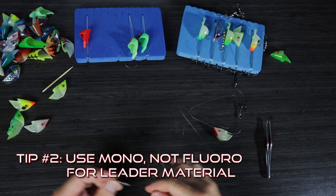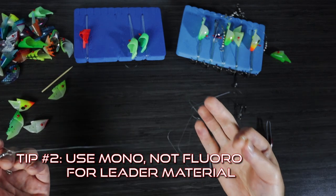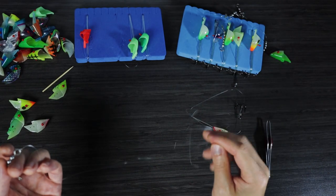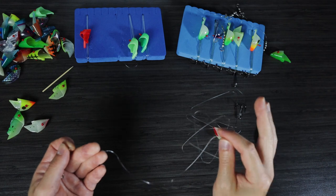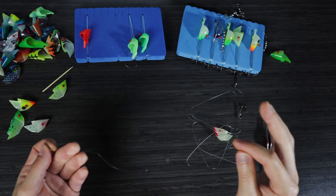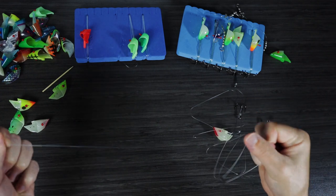Tip number two is using mono, not fluoro, for your leader material. And I'm sure some of you will disagree with this, but our thinking is this, so just hear me out. First, these fish are not that leader shy, so the advantage of running fluoro is kind of lost here.